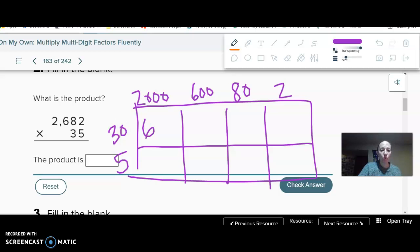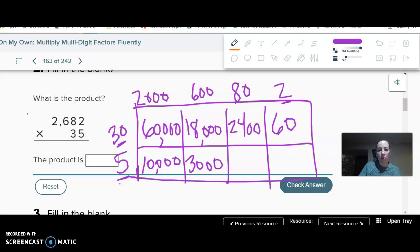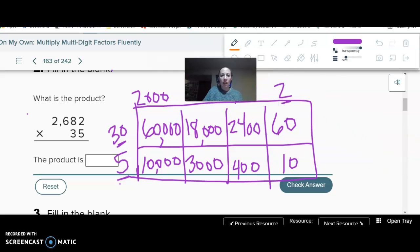So now I have 2,000 times 30. Well, 2 times 3 is 6 with four zeros needed. 600 times 30 is 18,000. 8 times 3 is 24. We're doing 2 times 30 here, so we get 60. Now we're going back to this line. Now we're doing everything times 5. 5 times 2,000, well 5 times 2 is 10 plus 3 more zeros. 600 times 5, 30 with 2 more zeros. 8 times 5 is 40 with 1 more zero and then 10. So now I take all these numbers and I add them together.